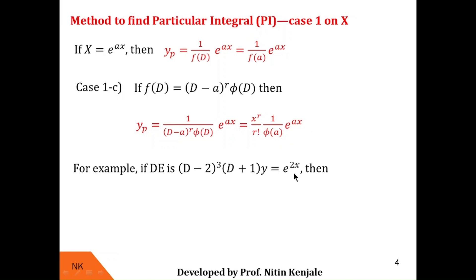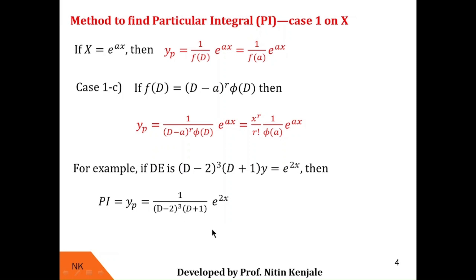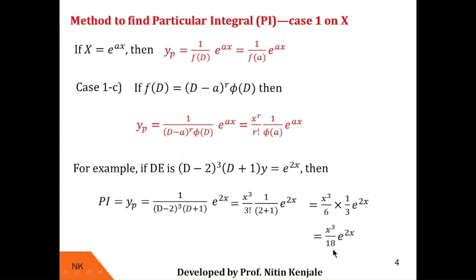Consider the differential equation (D - 2)³(D + 1)y = e^(2x). The corresponding yp is 1/[(D - 2)³(D + 1)] of e^(2x). If we substitute D = 2 in f(D), we see that (D - 2) becomes 0 and it appears 3 times. So first we eliminate (D - 2)³ and replace it by x³/3!. Then substituting D = 2 in φ(D), we get yp = x³/3! times 1/(2 + 1) times e^(2x). Since 3! = 6 and 2 + 1 = 3, giving 6 × 3 = 18, the final answer is yp = x³/18 e^(2x).